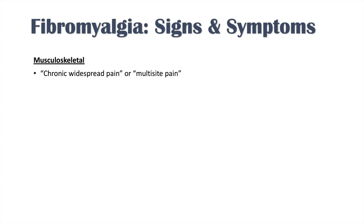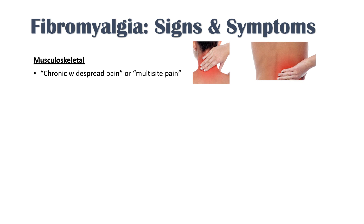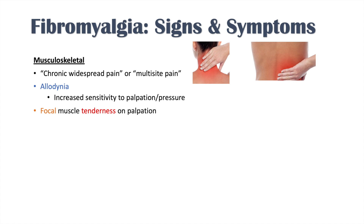The main category of signs and symptoms lies in musculoskeletal symptoms. We see chronic widespread pain or multi-site pain — pain located in many different parts of the body. Patients with fibromyalgia have what we call allodynia, an increased sensitivity to palpation or pressure, which ties into the central sensitization theory. We also see focal muscle tenderness on palpation, usually six or more sites involved.